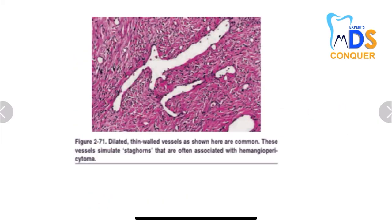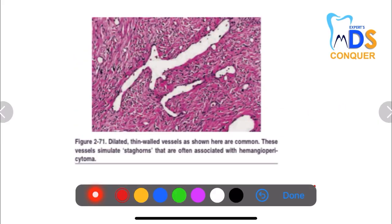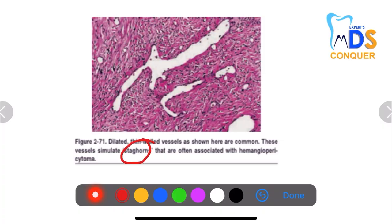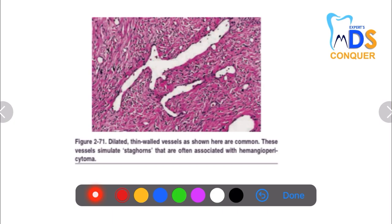Next, here you can see dilated thin-walled vessels simulating a staghorn appearance, and that is associated with hemangiopericytoma. Wherever you see unique names given for a particular histological or radiographical feature, just grab them. The staghorn appearance is due to dilated thin-walled vessels, which is seen with hemangiopericytoma.